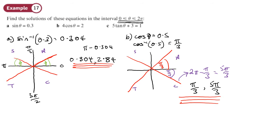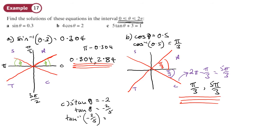Part C: again a bit of rearranging. Taking three from both sides gives 5 tan theta equals negative 2. Then dividing both sides by 5 gives tan theta equals negative 2/5. So we do tan inverse of negative 2/5 to find our principal solution. In radians, tan inverse of negative 2/5 gives a decimal: negative 0.38.